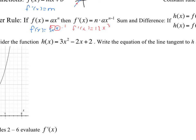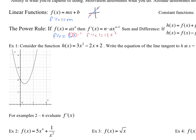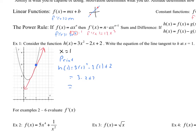We'll see where that comes into play in this first example. We're trying to write the equation of the line tangent to h when x is equal to 1. The two things I need to write the equation of a line are a point and a slope. We know x is equal to 1, so h of 1 equals 3 times 1 squared minus 2 times 1 plus 2, which is 3 minus 2 plus 2 equals 3. So my point is (1, 3).